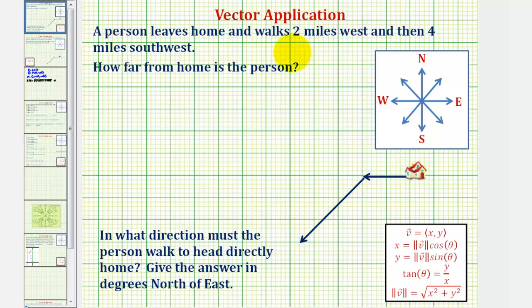A person leaves home and walks two miles west and then four miles southwest. How far from home is the person, and in what direction must the person walk to head directly home? We want to give the answer in degrees north of east.